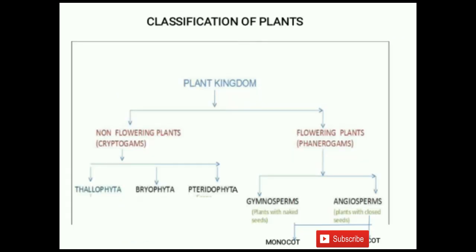Now we will talk about the classification of plants. The plant kingdom is divided into two groups. The first is non-flowering plants, or cryptogames — plants without seeds. The second is flowering plants, or phanerogames — the seed-bearing plants. Cryptogames is divided into three groups: Thalophyta, Bryophyta, and Pteridophyta. Phanerogames is divided into two groups: Gymnosperms and Angiosperms. Angiosperms is divided into two groups: Monocots and Dicots.